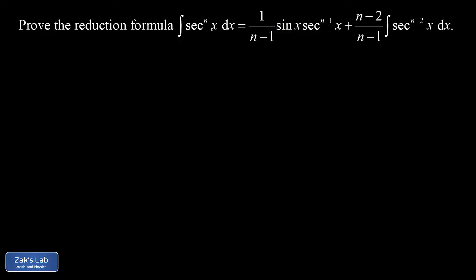In this video, we're deriving a power reduction formula for the integral of secant to the nth power. This formula turns out to be huge, but the main point is that on the right-hand side we have the integral of secant to the n minus second power — in other words, a lower power of the secant function and therefore a simpler integral to handle.